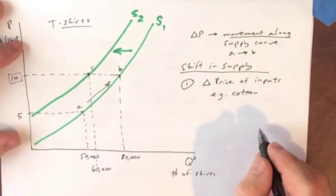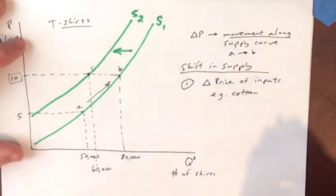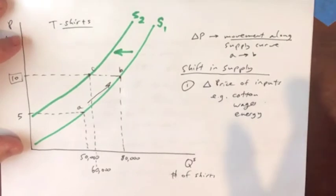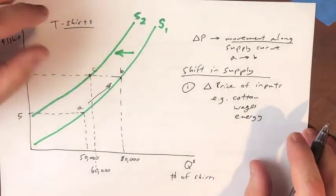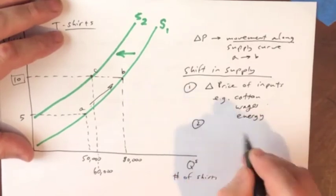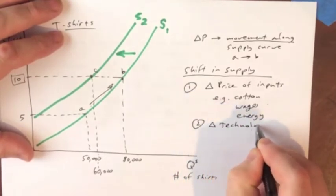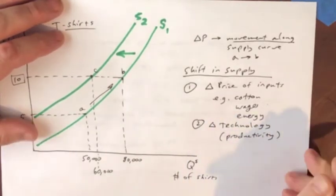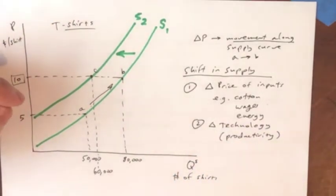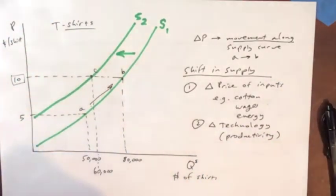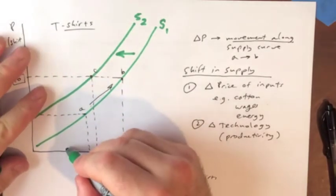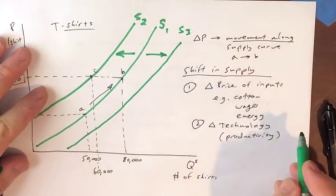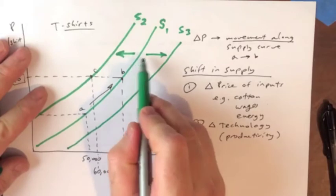One thing that can cause that is a change in input prices. There's lots of different input prices, wages, energy prices. It depends on each business, what are the inputs that they use. The second thing would be a change in technology. And by that we mean a change in productivity. How much can be produced per unit of the input? Let's say that the technology increases and we shift to a different supply curve, S3. Think about it this way. Right to left. Right is an increase in supply and left is a decrease in supply.